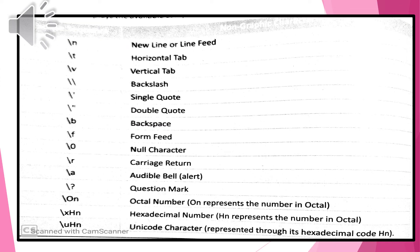Now look at this table — this is the example of the escape sequence. You can see: \n is used for the new line, \t for the tab space. In a sentence, if you want to give a tab space, use \t. If you want to use double quotes in a sentence, then use backslash double quotes. Detail will be explained in the next video.